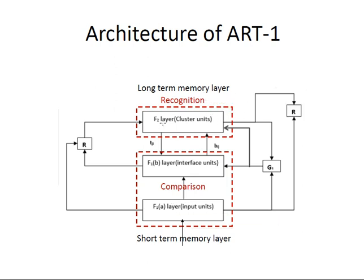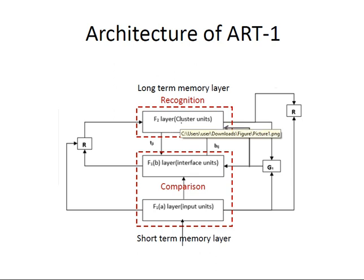F2 is a competitive layer because comparison takes place here. The cluster unit in the output layer takes the input and learns — the candidate in the cluster unit learns every time input comes and produces the output, delivering what it learned from the previous input. If not satisfactory, the weight changes again. The reset of F2 determines whether a cluster is allowed to learn the input patterns or not.